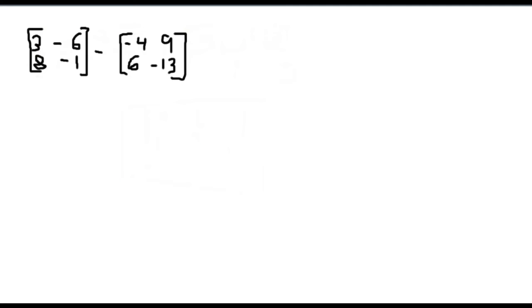Okay, I'm back with a different example. This time we have two 2 by 2 matrices, which are 3, negative 6, 8, negative 1, and then we have negative 4, 9, 6, and negative 13.